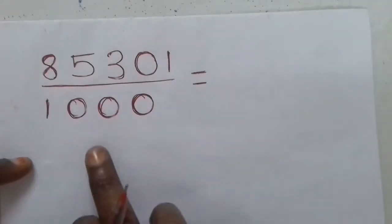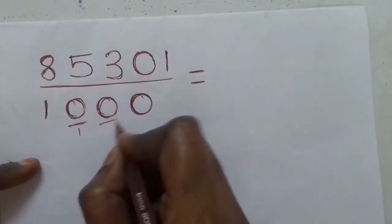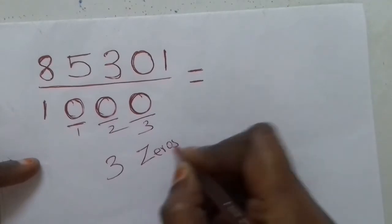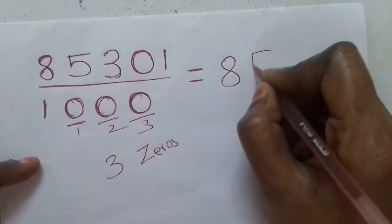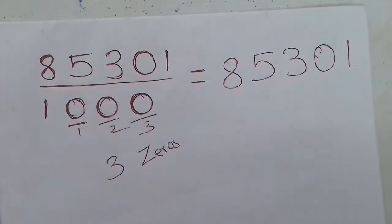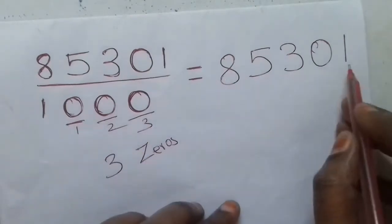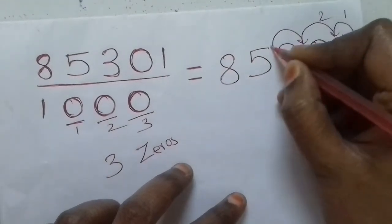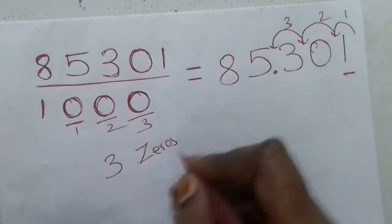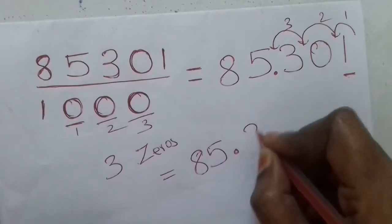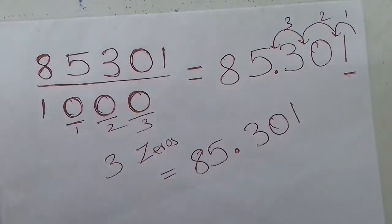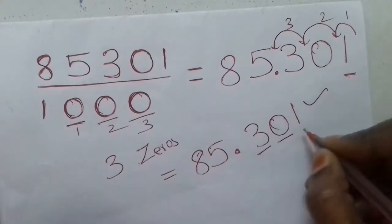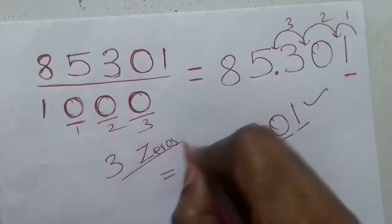Next question. Count the number of zeros in the denominator — one, two, three zeros. The numerator is written as it is: 8, 5, 3, 0, 1. There are three zeros, so we shift three places to the left. Starting from the units place, we move one place, then two places, then three places. The answer is 85.301. Cross-verify: count the decimal places — one, two, three digits after the decimal point, so three decimal places. Three zeros, three decimal places — correct.